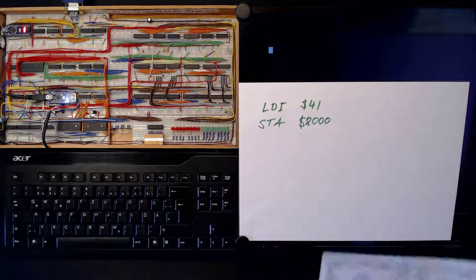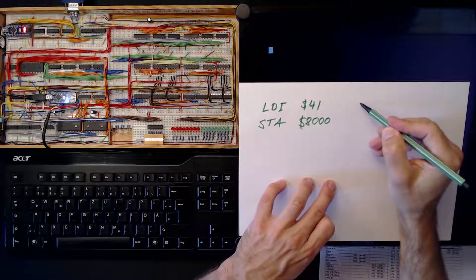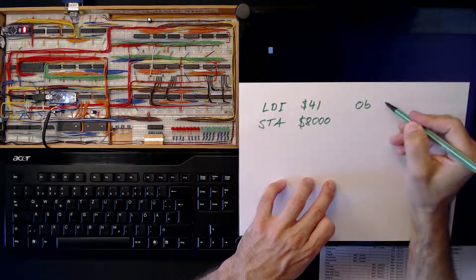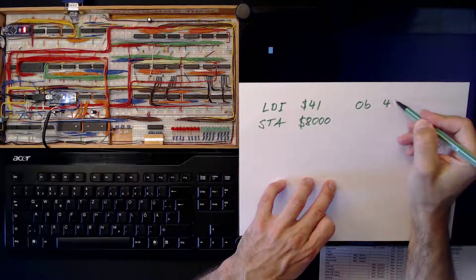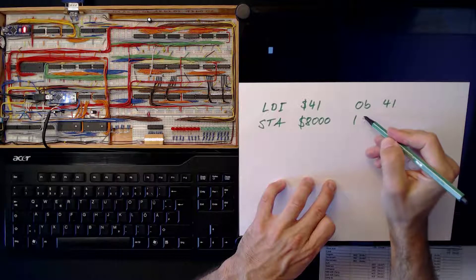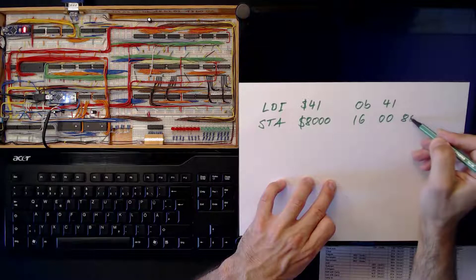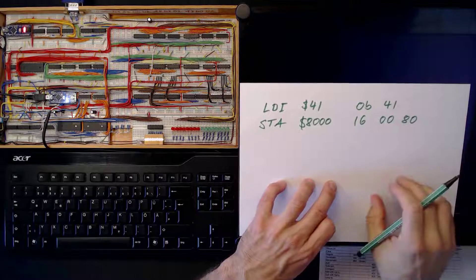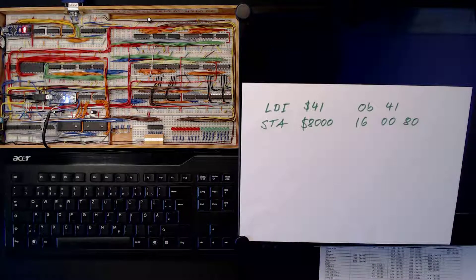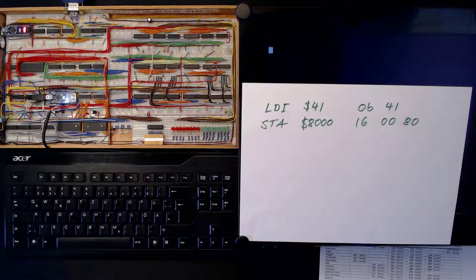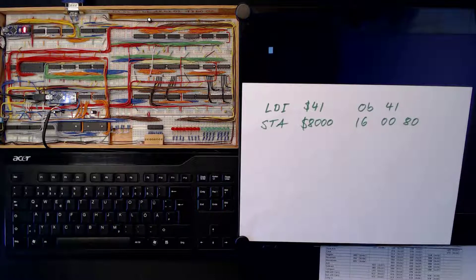So let's write that down. In machine language that's: 0x0B, 0x41, 0x16, 0x00, 0x80. Note that I have broken down the address 0x8000 into its LSB 0x00 and MSB 0x80, since our CPU is little-endian. Now let's write our little program into RAM.